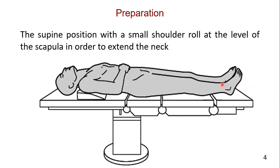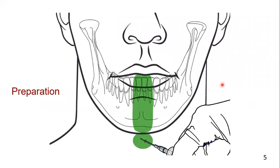The patient is placed supine with a small shoulder roll at the level of the scapula in order to extend the neck. The patient is prepared in the normal fashion and local anesthetic with a vasoconstrictor is infiltrated in the proposed incision line.